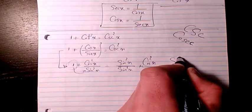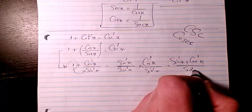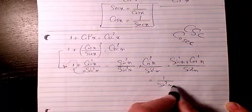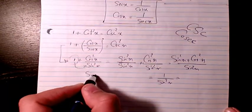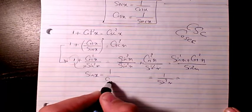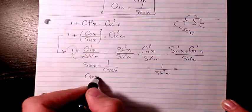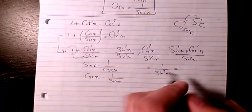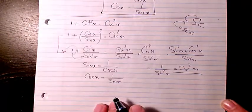So that we have 1 over sine squared x. And because sine x is the inverse of cosecant x and cosecant x is the inverse of sine x, 1 over sine squared x will be equal to cosecant squared x. That's what we have on the right hand side.